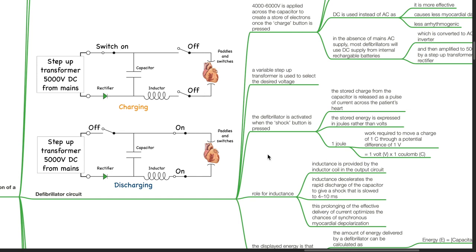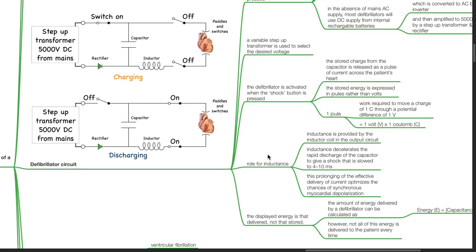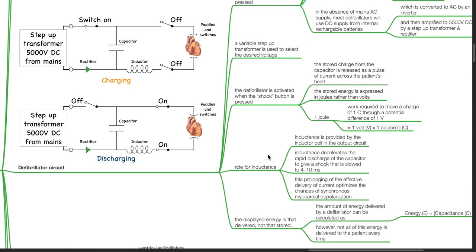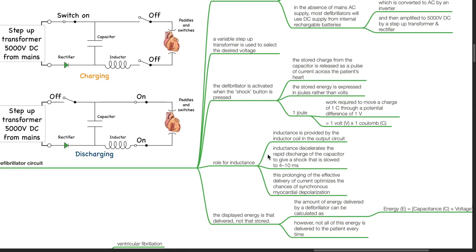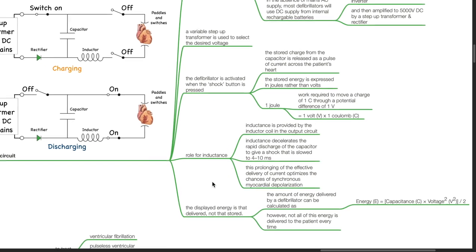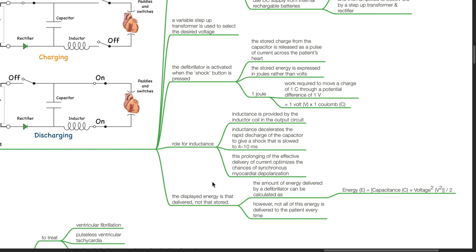The stored energy is expressed in joules rather than volts. One joule equals the work required to move a charge of one coulomb through a potential difference of one volt, or one volt times one coulomb. The role of inductance: inductance is provided by the inductor coil in the output circuit. Inductance decelerates the rapid discharge of the capacitor to give a shock slowed to 4 to 10 milliseconds, optimizing synchronous myocardial depolarization. The energy delivered can be calculated as E = C × V² / 2.